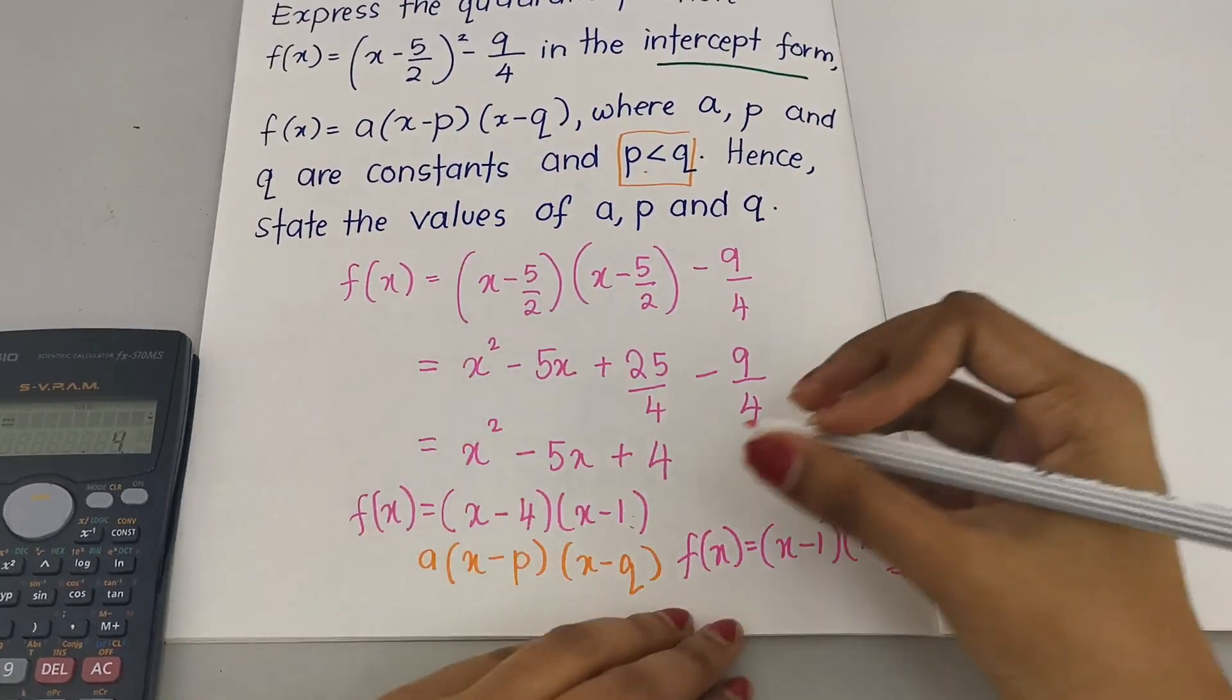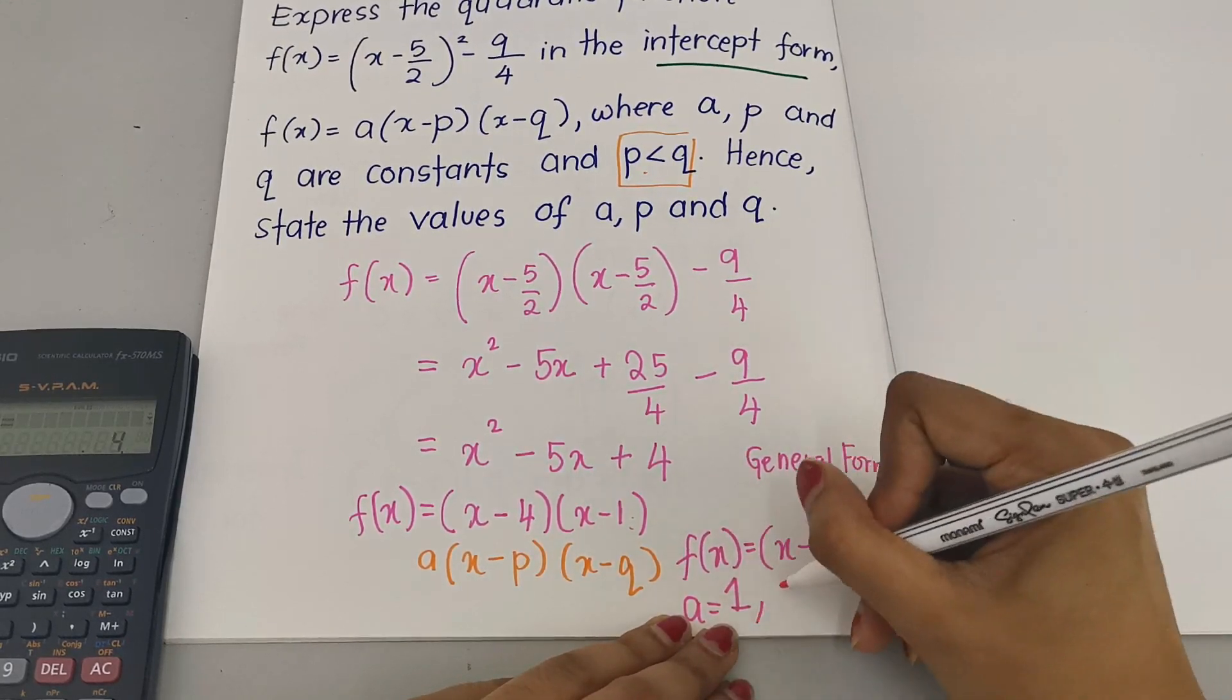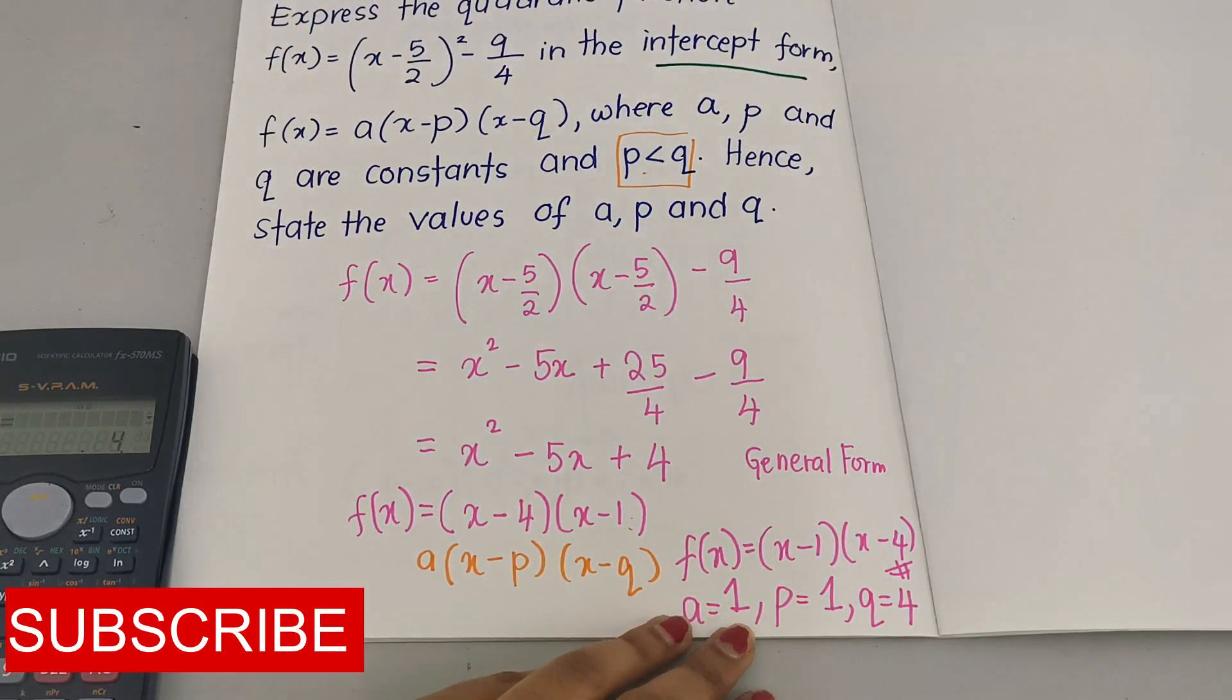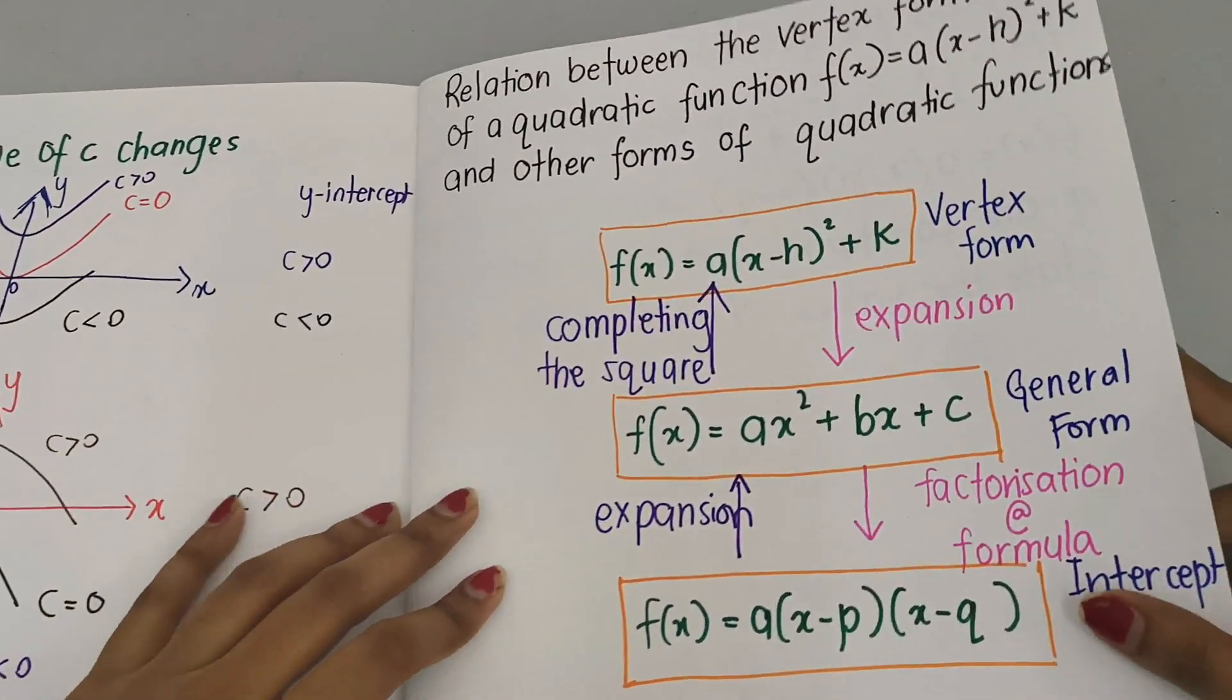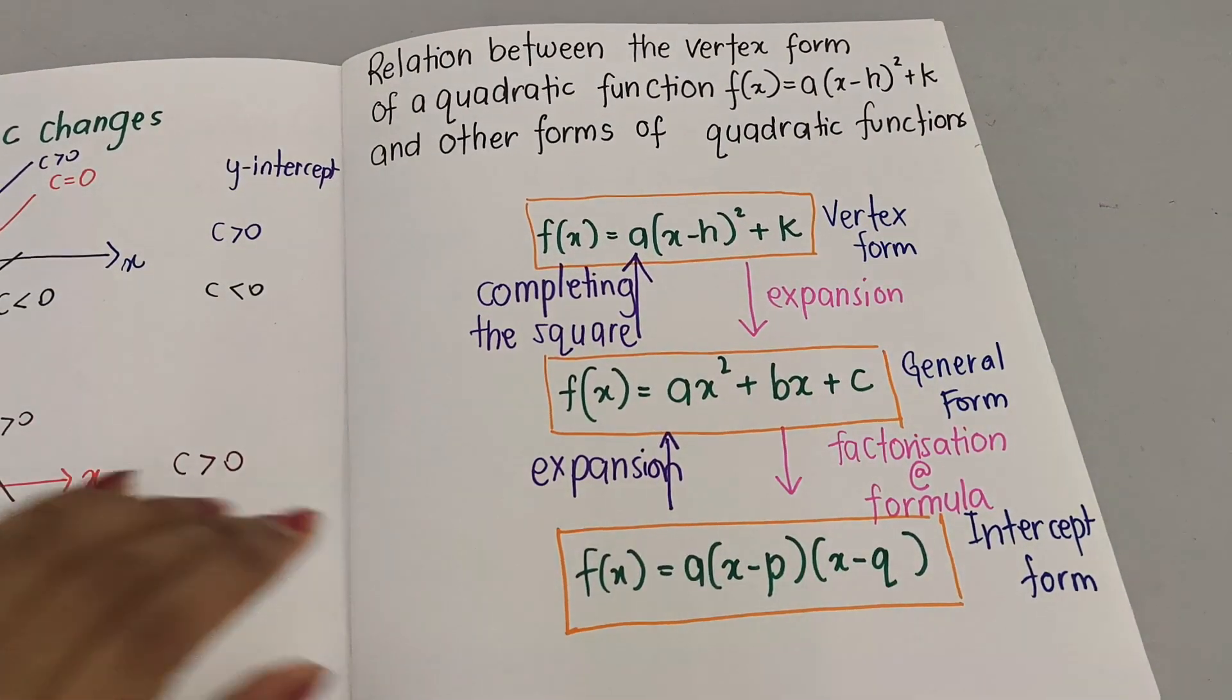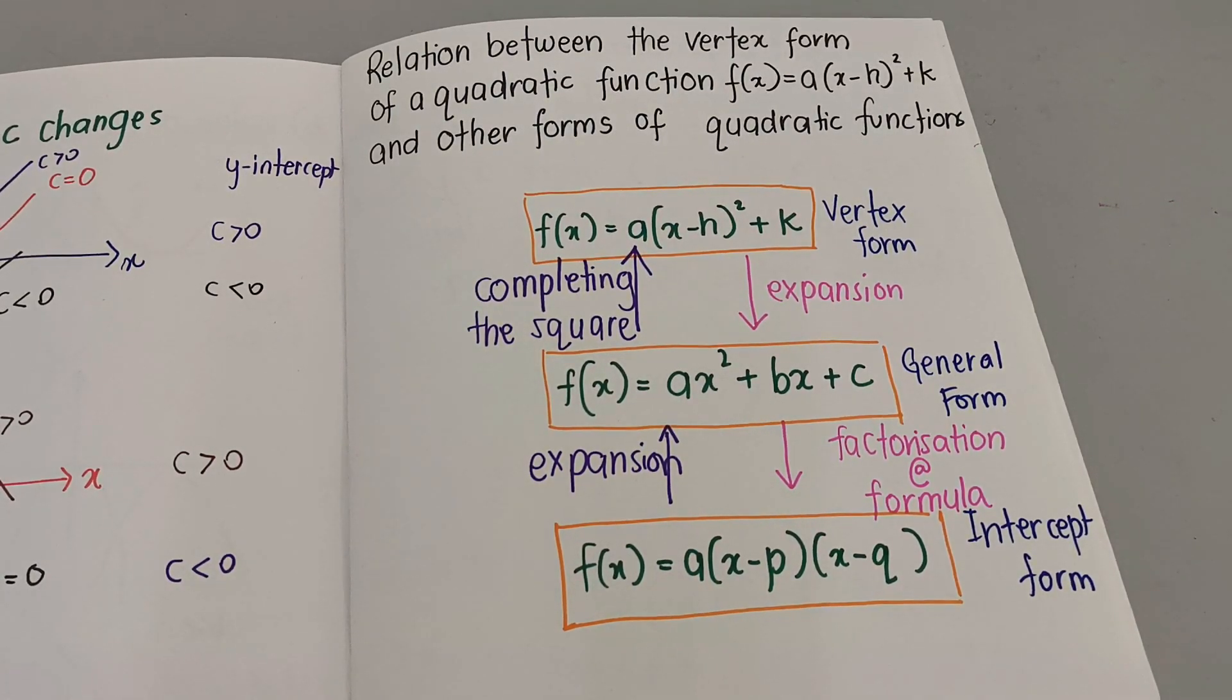Now what is the value of a? a in front here is 1. What is the value of p? p is 1. What is the value of q? q is 4. So the moment you understand how to do this step by step, all the questions, even completing the square, will be easy to be done. Thank you so much for watching. Till I see you in my next video, bye bye.